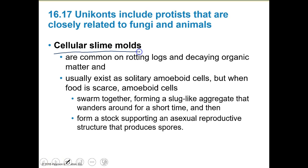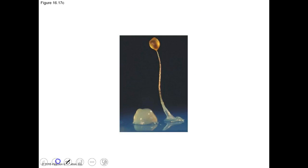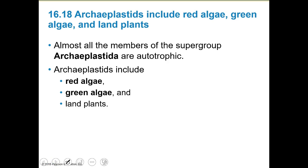Cellular slime molds are also part of this group, common on rotting logs and decaying organic matter. They usually exist as solitary amoeboid cells, but when food is scarce, amoeboid cells can swarm together into a slug-like aggregate — almost a social behavior. They'll form a stalk supporting an asexual reproductive structure and actually produce spores.